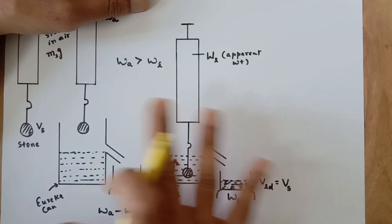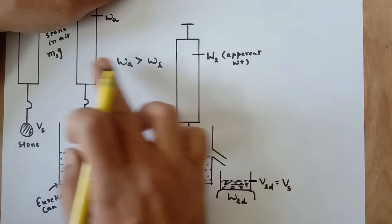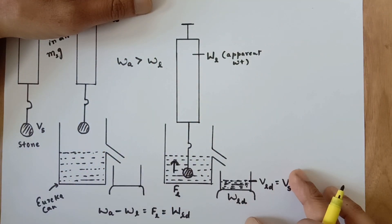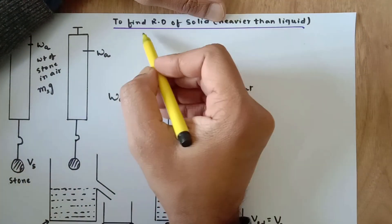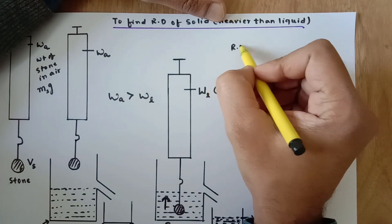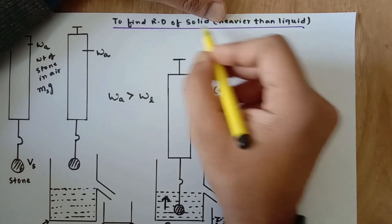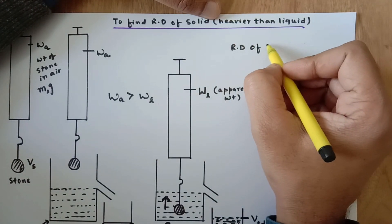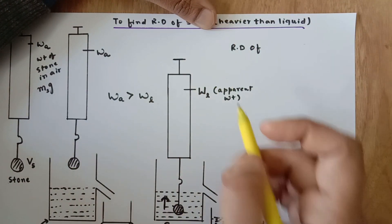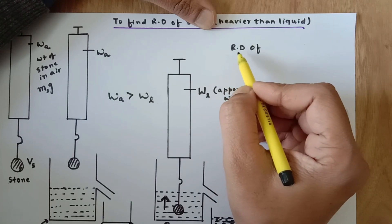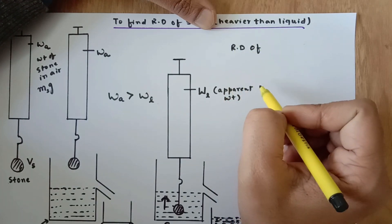This is an experiment and we are going to derive an expression based on these readings. The relative density of the stone, which is heavier than the liquid — you can also consider the liquid as water. Then it will become specific gravity, because specific gravity is the ratio of the density of the stone to the density of water.